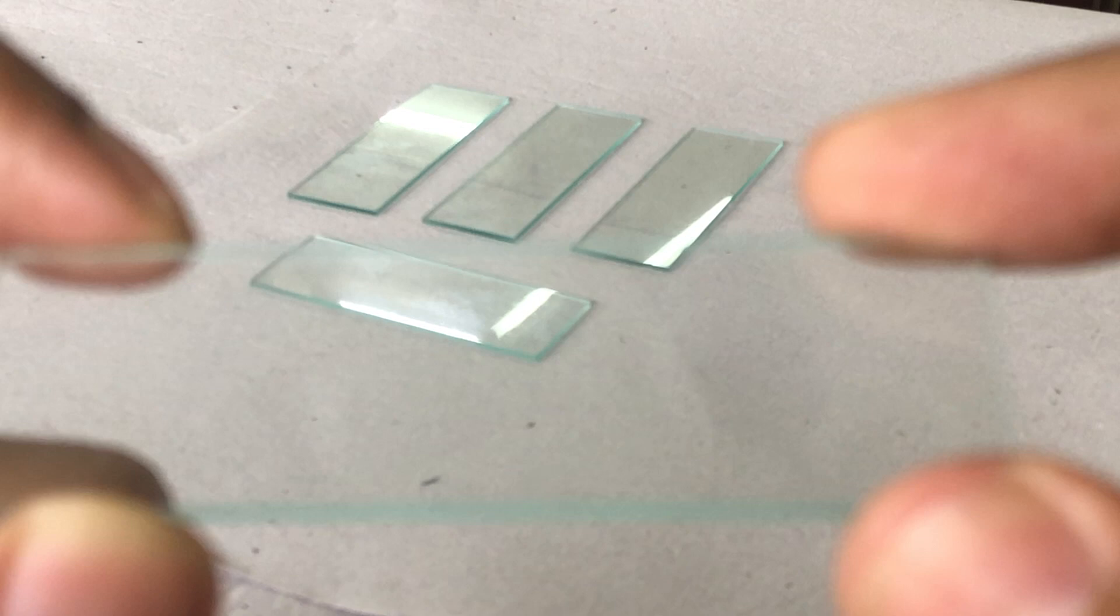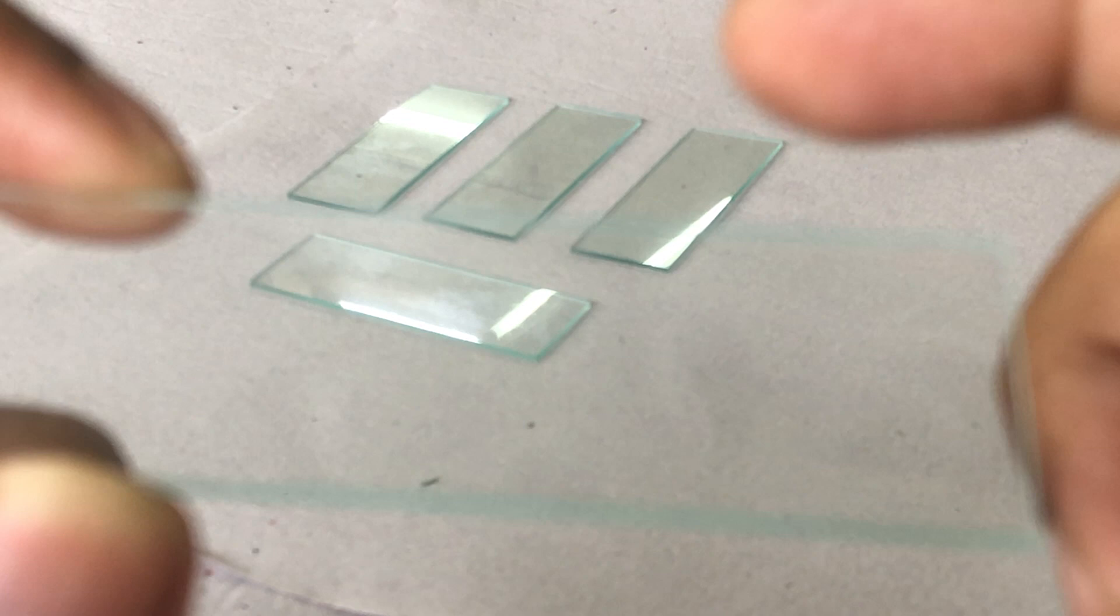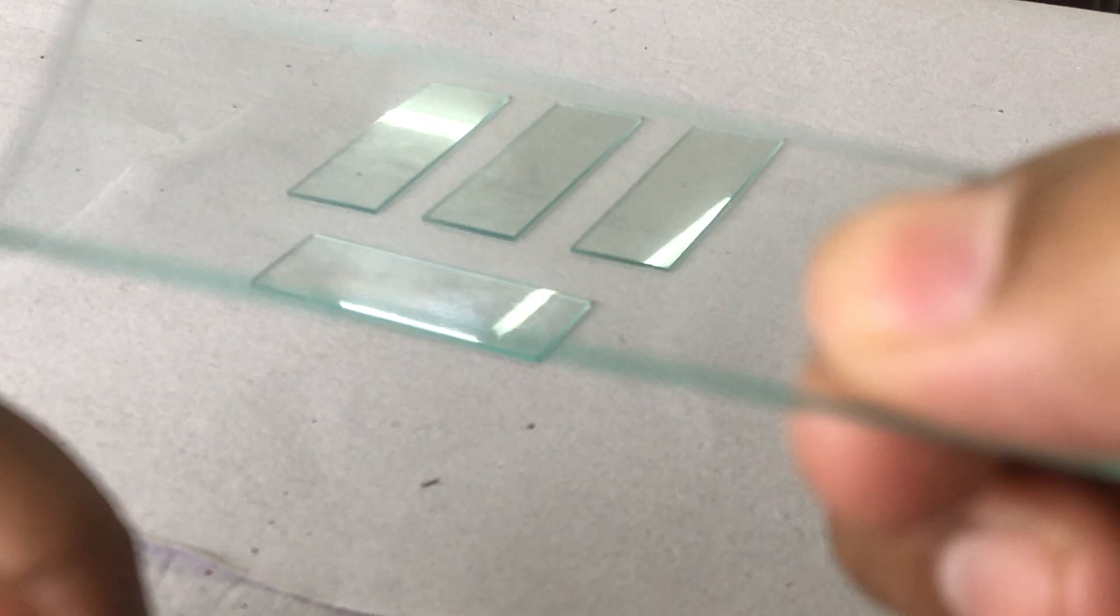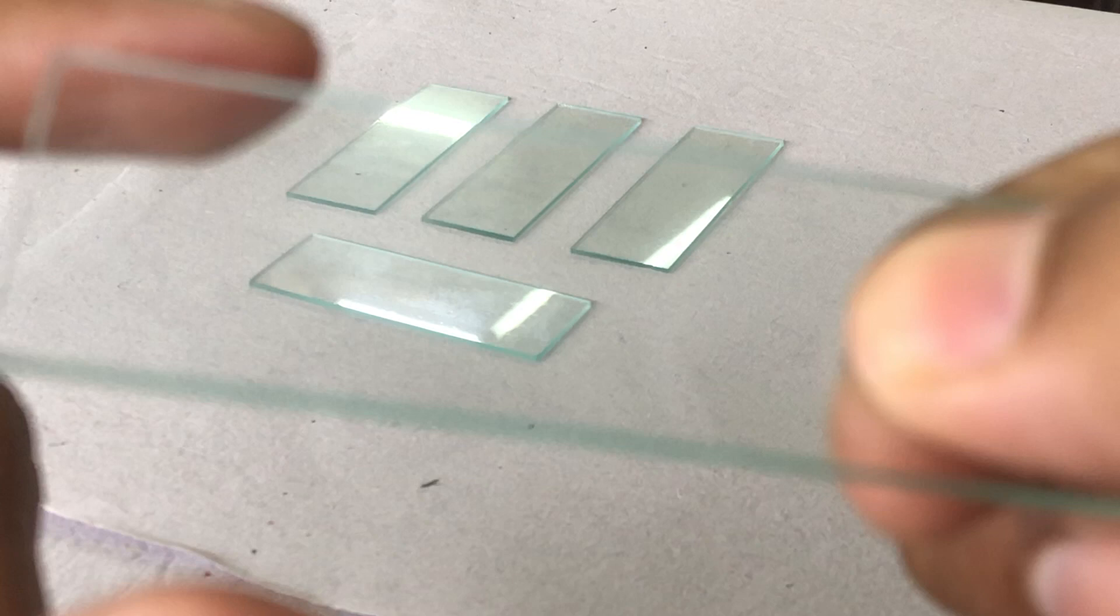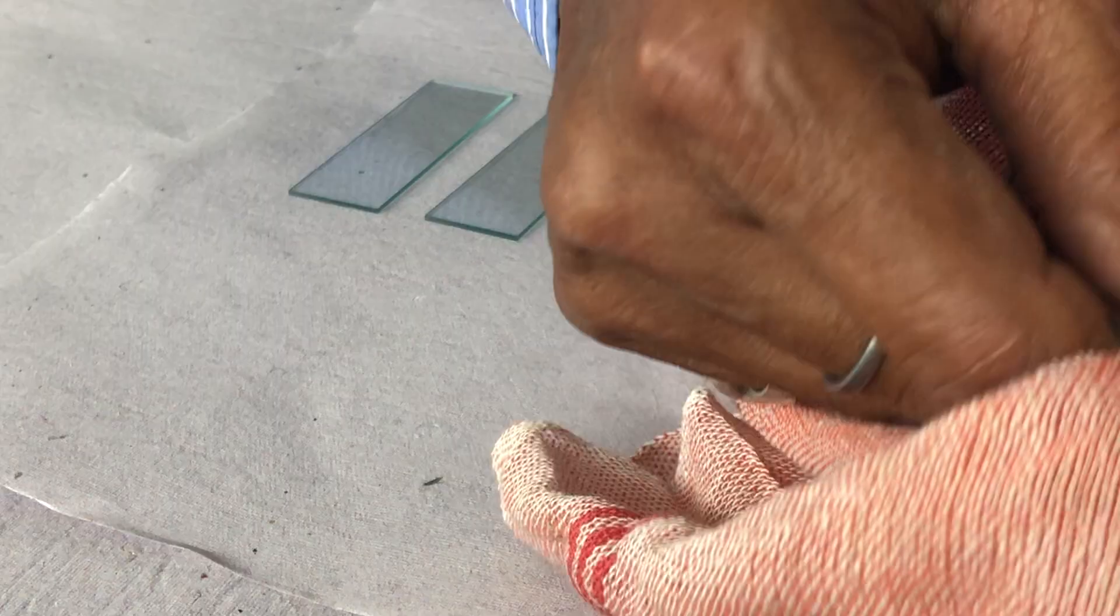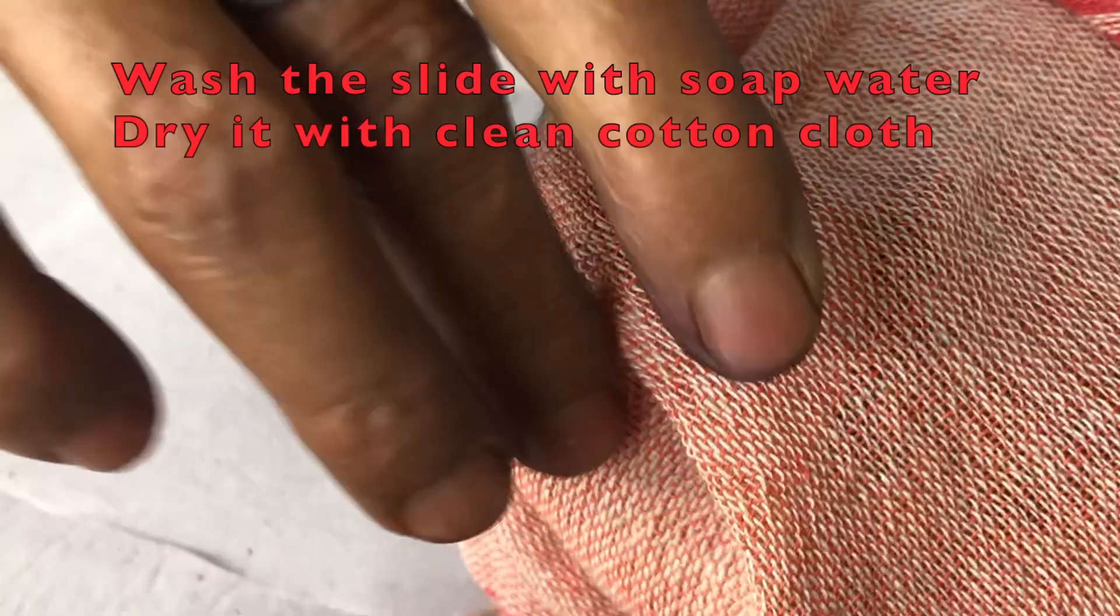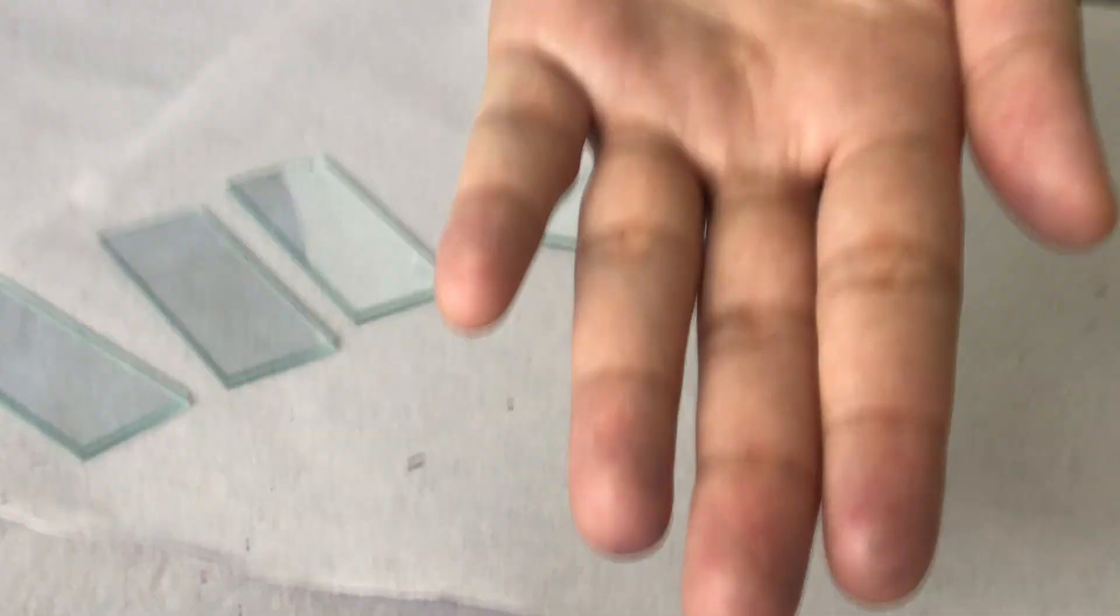When making the smear, we need to ensure that the slide is perfectly clean. There should not be any grease on the slide, and for that you should always hold the slide from the margins. We should never hold the slide from the center because the grease on the fingers gets stuck on the slide, and when the smear is made, then there is a problem in the smear. While cleaning the glass slide, we can use a soft cotton cloth.